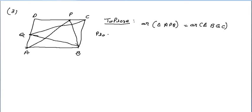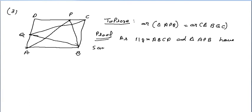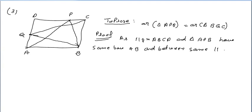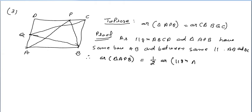Proof: Parallelogram ABCD and triangle APB have the same base AB and lie between the same parallels AB and DC. Therefore, area of triangle APB equals half the area of parallelogram ABCD. This is equation number 1.